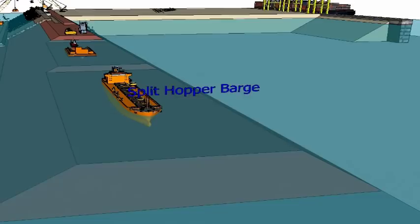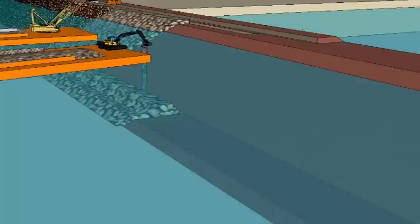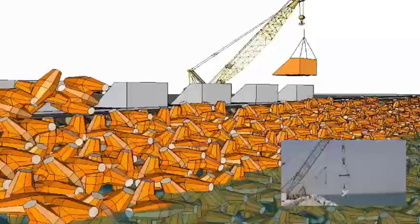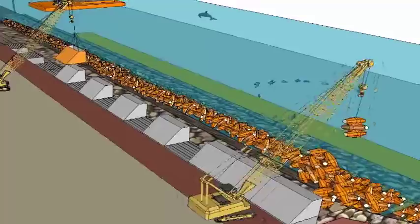The breakwater is constructed using core rock, rock armor, precast armor units and geotextile. The core rock is placed using split hopper barges in deep water and by lorry tipping and dozers in shallow water where the risk of slippage is minimal. The precast armor units are placed using crawler cranes fitted with a real-time visual aid system that enabled 70 placements per day. The wave wall is cast in situ in 6-meter long sections.